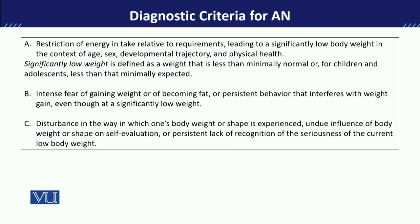This is why we look at Criterion A for anorexia nervosa, which is the restriction of energy intake. This restriction of energy intake means that the amount of calories the body needs is not being met, resulting in a body weight that is significantly low.